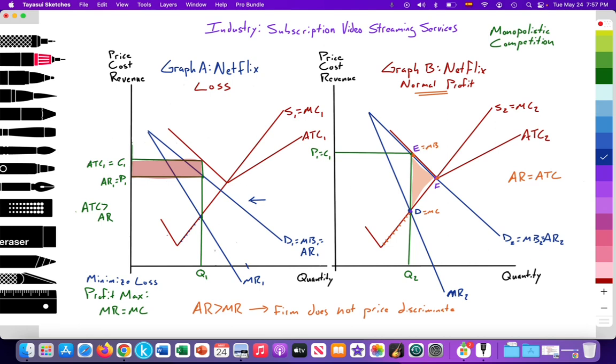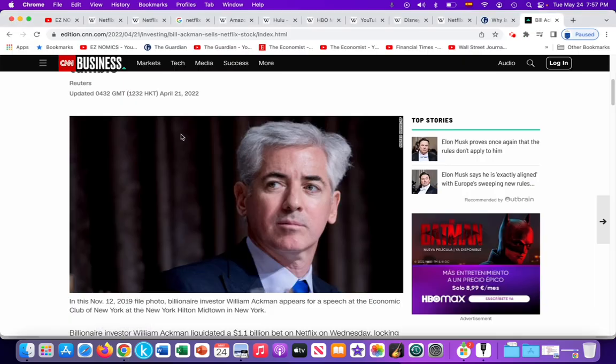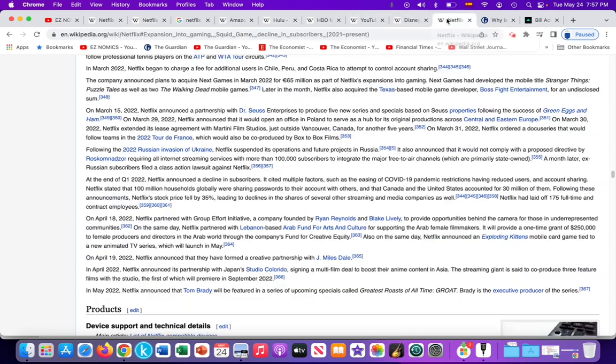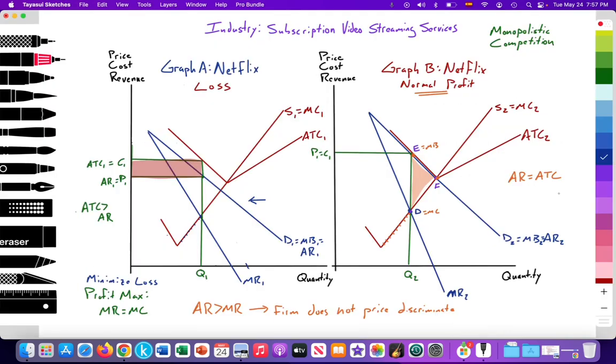So what is Netflix going to do? Any entrepreneur is going to try to reduce their costs. We see here, April 2022, quarter one, 2022, Netflix announced the decline in subscribers. Part of it due to COVID easing, less demand because people are now going out and enjoying life beyond being locked into their homes. And here we can see that Netflix had laid off 175 full-time contract employees. What does that mean? It means that they're beginning to reduce their variable costs. They're firing labor as a variable cost. They're also going to cancel the production of different shows that they had planned. As they cancel shows, as they fire workers, what that's going to do is going to reduce their costs on average. It's going to push their ATC curve down and with it, their supply curve.